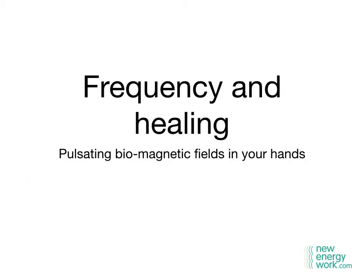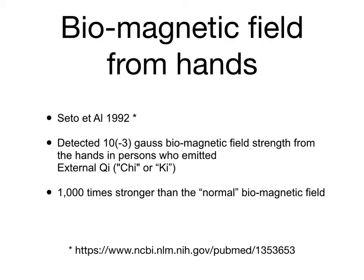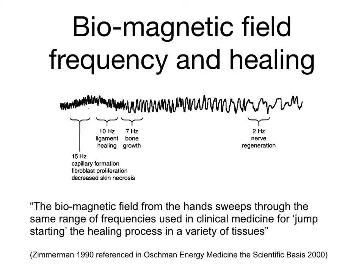Let's think about research on frequency, healing, and the pulsating biomagnetic field in your hands. Saito in 1992 detected a 10 to the minus 3 Gauss biomagnetic field strength — a very strong field — in the hands of people doing ki work such as Qigong or shiatsu. He found that people who developed their ki field had a field in their hands a thousand times stronger than the normal biomagnetic field.